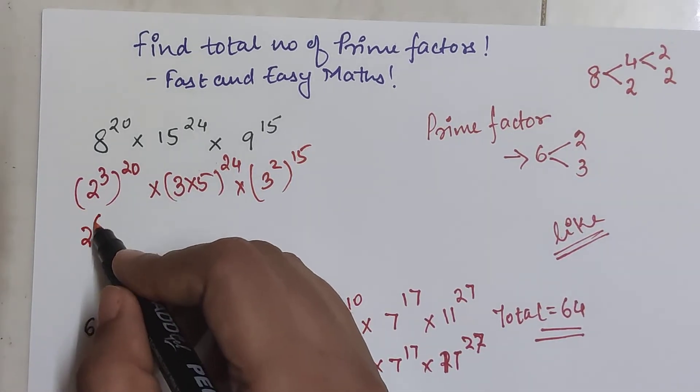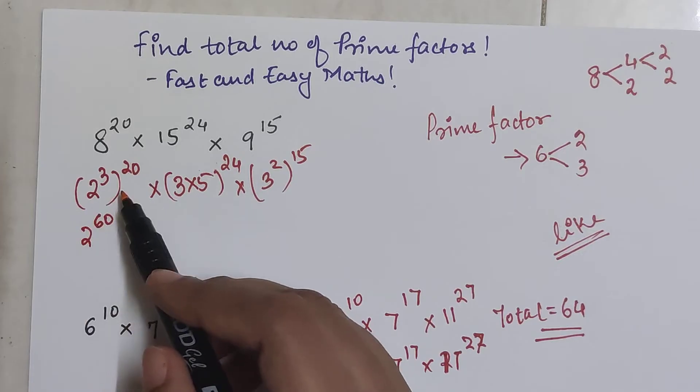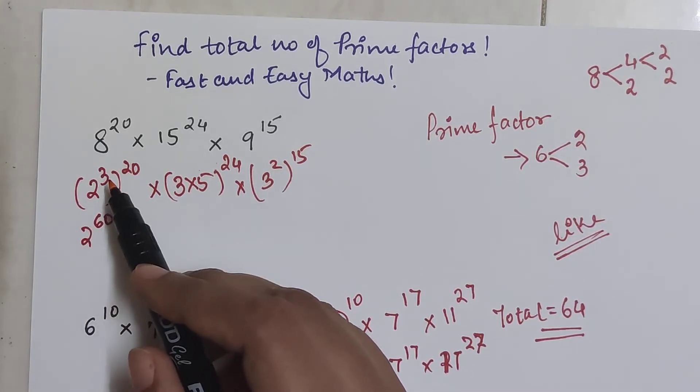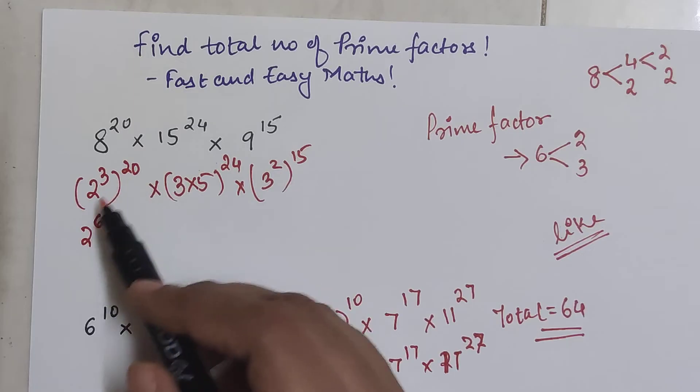So now this comes out to be 2 raised to 60 because we know that whenever we have something like this, 2 raised to 3 the whole raised to 20, we can just multiply the indices.